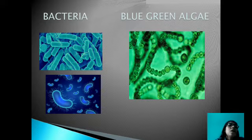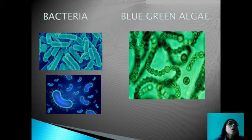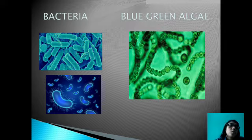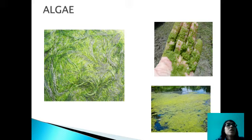Cyanobacteria are blue-green algae and are prokaryotic type of algae. They play a very important role in nitrogen fixation. Nitrogen fixation is a process by which the environmental inert nitrogen is converted into nitrite and nitrate, which is useful for the plant. Nearly 78% of nitrogen is present in the environment in inert form. Plants cannot utilize this nitrogen directly, but nitrogen is very important for plant growth. Hence this nitrogen is converted into nitrite and nitrate so that the plant can utilize it. When nitrogen fixation is carried out by a biological organism, it is called biological nitrogen fixation, and blue-green algae plays a very important role in this.